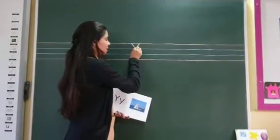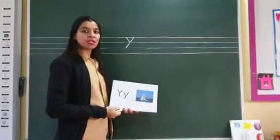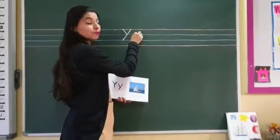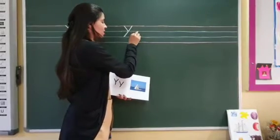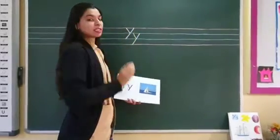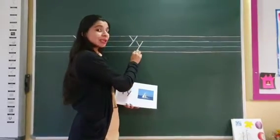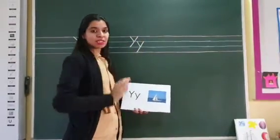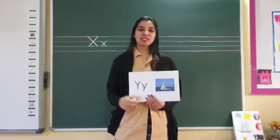Once again, a slanting line and a small slanting line gives us capital Y. Now let us see how do we write small y. We will write from the first blue line to the second red line. We will draw a slanting line and a small slanting line — a big slanting line towards the second blue line and a small slanting line between the blue lines gives us small y. Let us see some vocabulary words related to letter Y.